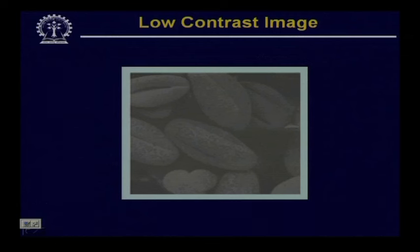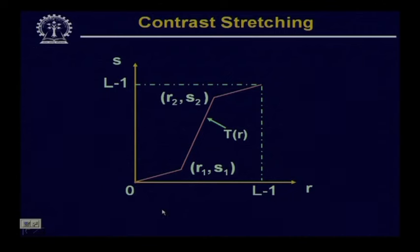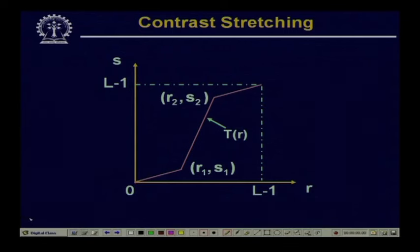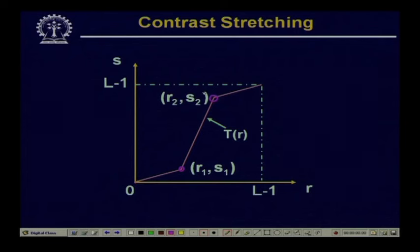A typical transformation which may be applied for contrast stretching is shown in this figure. Here in this transformation, we have indicated two different points: one is R1, S1 and the other point is R2, S2. The locations of these points R1,S1 and R2,S2 control the shape of this transformation function, and accordingly influence what different types of contrast enhancements we can obtain in the processed image.